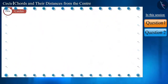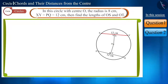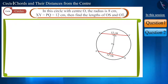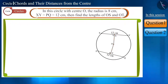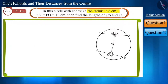Let's start with our first question. In the given figure, the center is O and the radius is 8 cm. The length of the chords XY and PQ is given to be 12 cm. Then find the length of OS and OT.